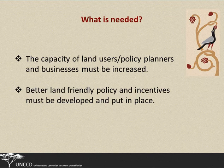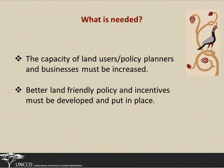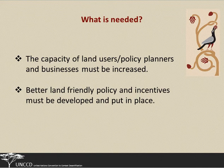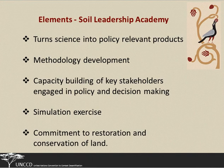Land degradation neutrality — where the amount of land available stays stable or increases — is something achievable at every level. We're targeting the national level because we're an international process, but it doesn't have to be at that level. The gap is that there's insufficient capacity among land users and policy planners to understand the challenges and put in place better policy and incentives. This was the challenge we faced, and what we came up with was the idea of the Soil Leadership Academy.